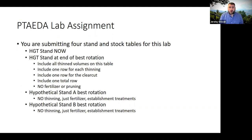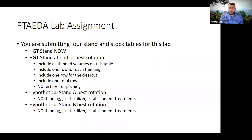Those four tables are: the HGT stand we visited for lab last week, right now at age 12. Then you're going to run a bunch of different modeling scenarios in PTAIDA for that HGT stand, come up with your best rotation, and submit one stand-and-stock table. I've shown you in the video how to include different rows for thinning, so be sure you include those rows. I'm trying to simplify each of these scenarios so that you can do them in a reasonable amount of time.